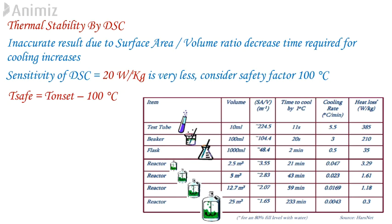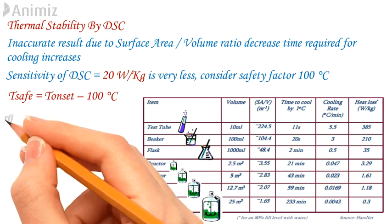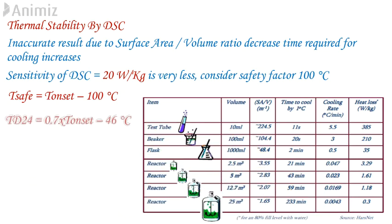The TD24 can also be determined from DSC results where DSC sensitivity is considered as 10 Watt per kg. TD24 is the temperature at which TMR-AD is 24 hours. TMR-AD is the time it takes for a reaction mass to reach a maximum rate of heat release for a given starting temperature. Since the sensitivity of DSC is comparatively less, it is better to perform some advanced testing such as ARC or Phytek if DSC shows an onset of decomposition which is very close to operating temperature.